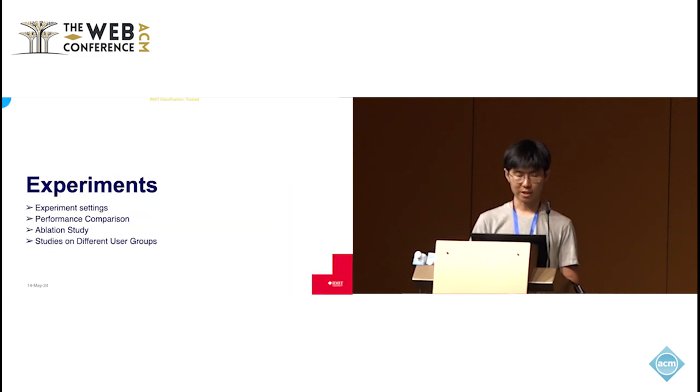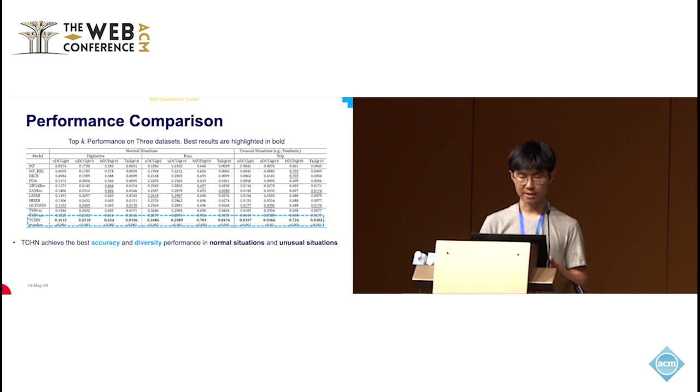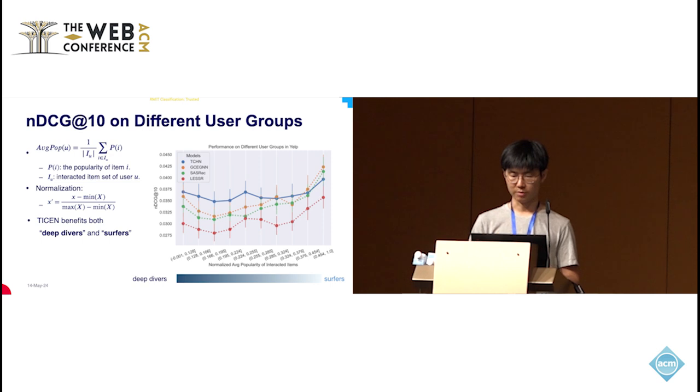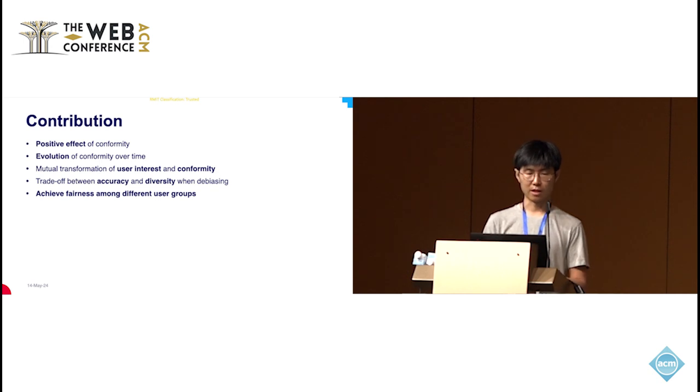Due to time limits, I may skip the experiment details. But I want to emphasize that our model achieved the best accuracy and diversity in the experiments, and we obtained fairness between different user groups in terms of interest in popular items. I think that's all. Thank you.